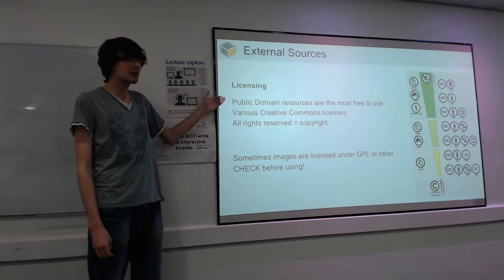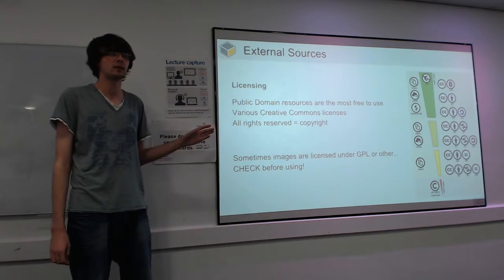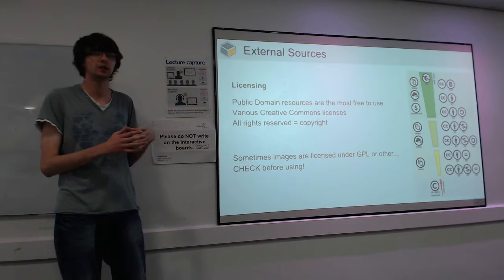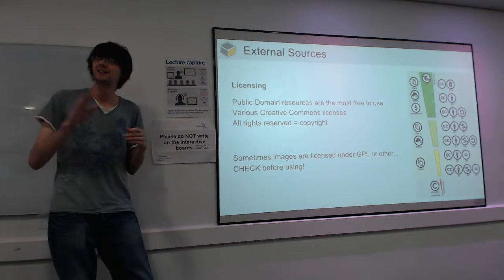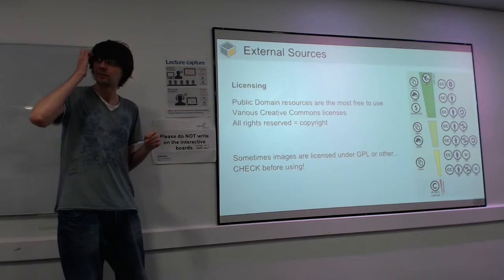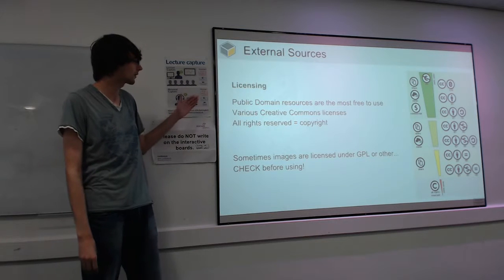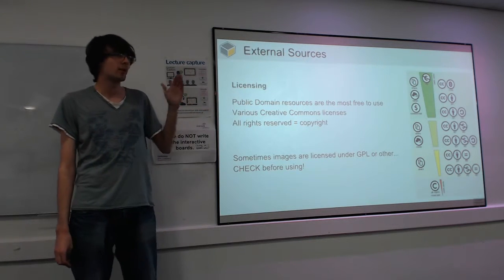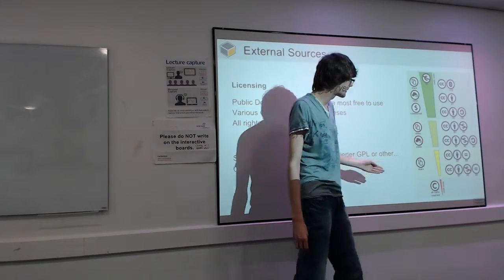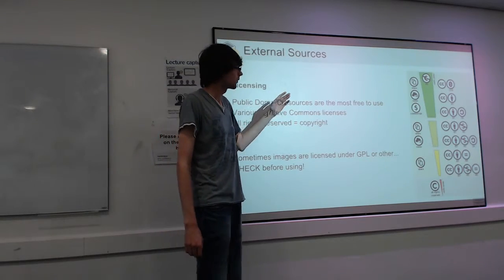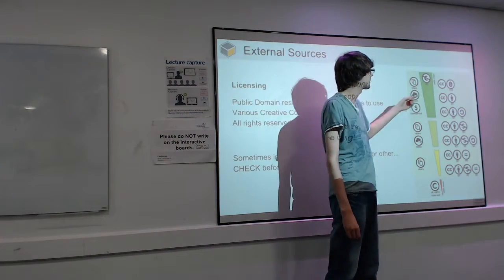If you can, go for public domain stuff, because those people want you to use it — that's why they've released it so freely. Essentially, you can do anything you want with it: change it, sell it. You don't have to reference who it belongs to. When you're looking at stuff from online, you'll generally find it under a Creative Commons license. This is the full range of Creative Commons licenses. The most open one is essentially public domain — Creative Commons Zero — which is the same thing as a public domain license.